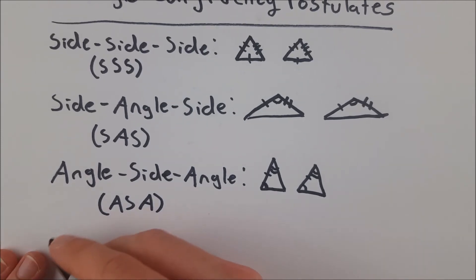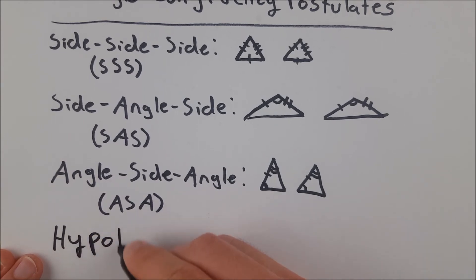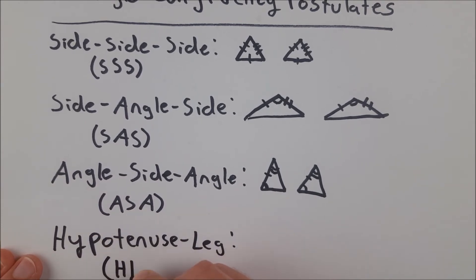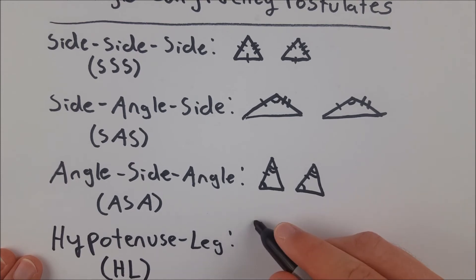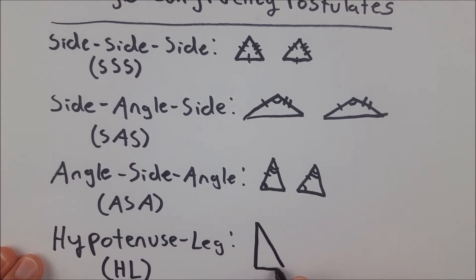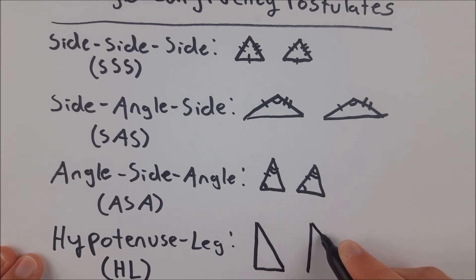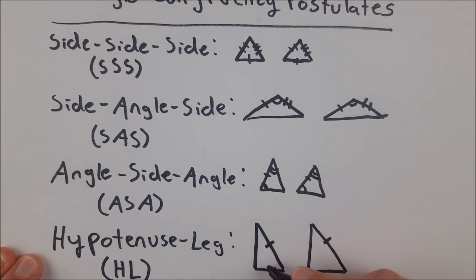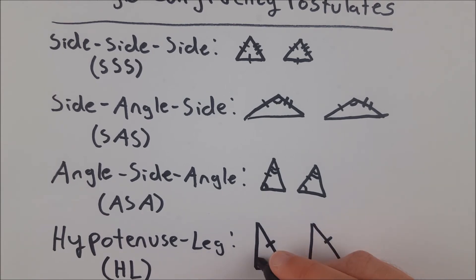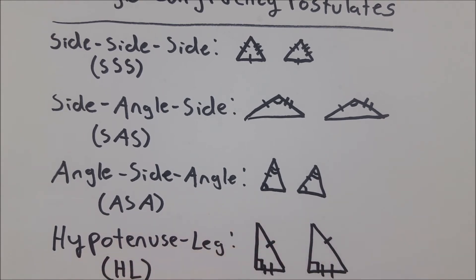And then lastly, we'll talk about a more specific one, which is the hypotenuse-leg congruence postulate, abbreviated HL. The word hypotenuse might key you into the fact that this postulate only works with right triangles. So let's say we have a right triangle and another one. If they have a congruent hypotenuse and a congruent leg — they only have one hypotenuse — then these two triangles have to be congruent. This is only true for right triangles: their hypotenuses are congruent, and they have one pair of legs congruent.